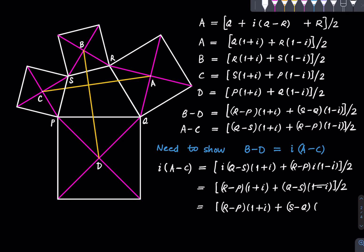This was i minus 1, so we get (S minus Q) times (1 minus i). We're just shuffling the signs. And this expression matches with the expression of B minus D.